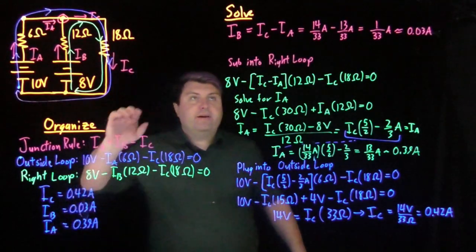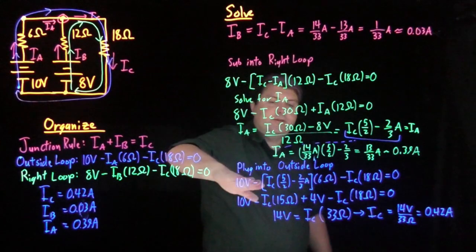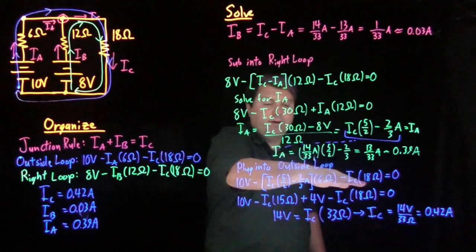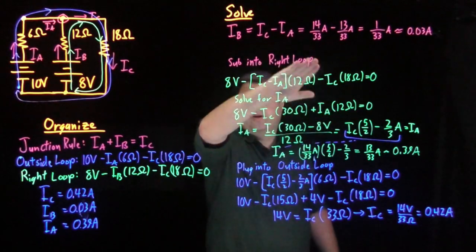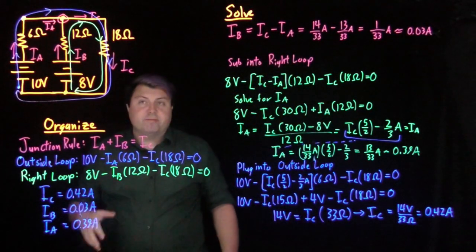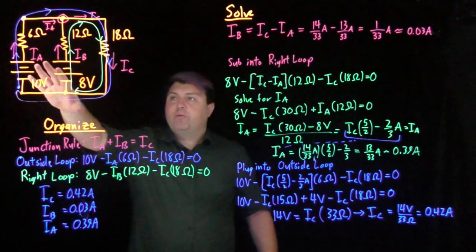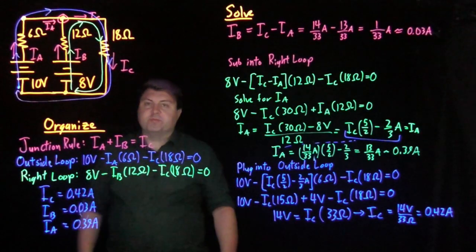So if we don't panic, if we do a couple substitutions, we very quickly get ourselves to one equation, one unknown. We can solve for that and then we can go back to previous equations and solve them. So that's how we do circuits when we have multiple batteries or we need multiple loops.